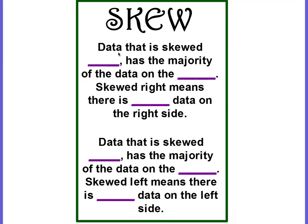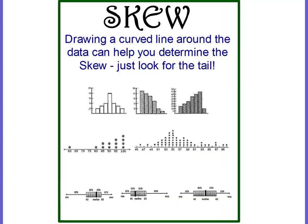Then we have skew. Data that is skewed right has the majority of the data on the left side — skewed right means there is less data on the right side. Data that is skewed left has the majority of the data on the right side, so skewed left means there is less data on the left side. You can draw a curved line around the data to help determine if it is skewed left or right — just look for the tail.